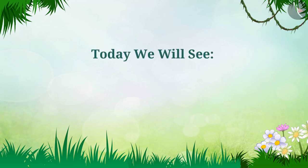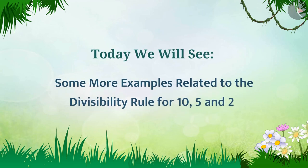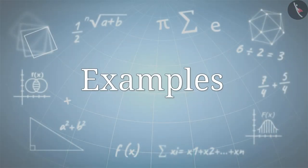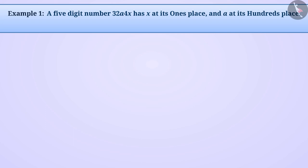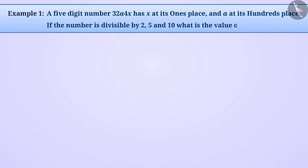Today we will see some more examples related to divisibility rules for ten, five, and two. A five-digit number, 3 2 a 4 x, has x at its ones place and a at its hundreds place. If the number is divisible by two, five, and ten, what is the value of a and x?